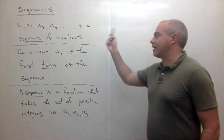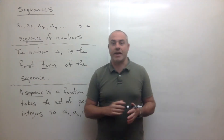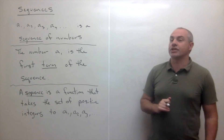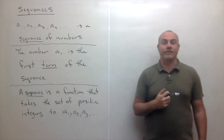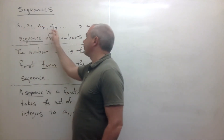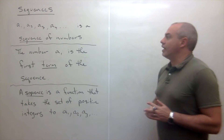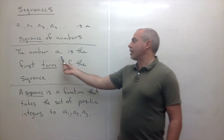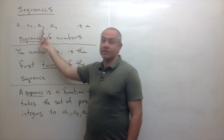Welcome back. Today I'd like to talk to you about sequences — we're changing gears now in the class. The first half of Calculus 2 covers integration and applications of integration, and now we're going to switch into sequences and series. Let's start with some basic definitions. A sequence is typically written as a1, a2, a3, a4, and so on, where the a's are just numbers — a list of numbers with some order. We call a1 the first term of the sequence, a2 the second term, and so on.